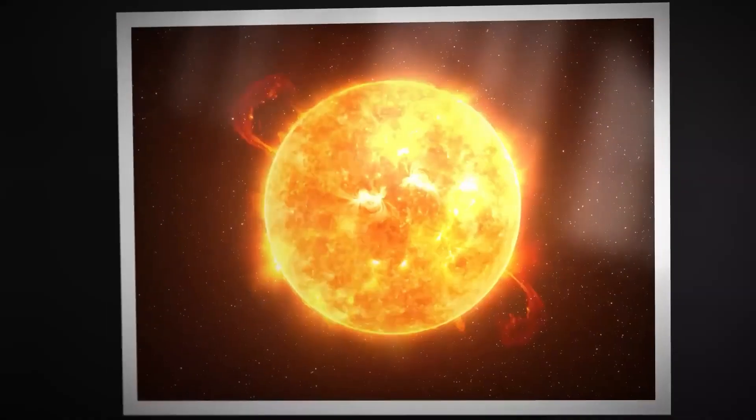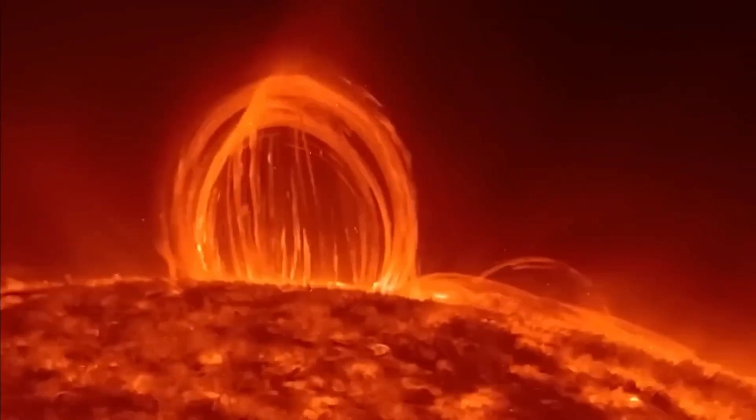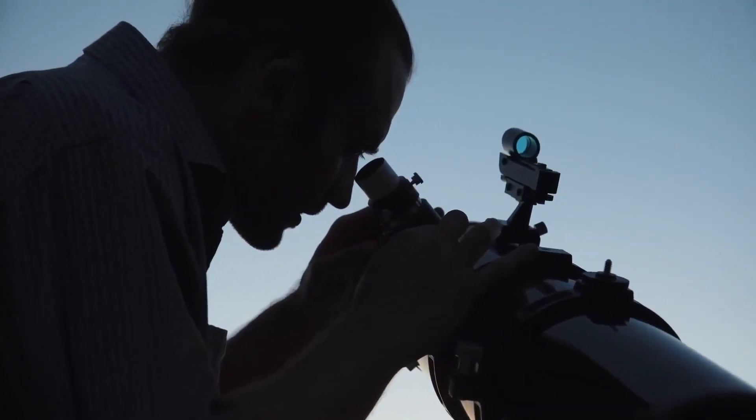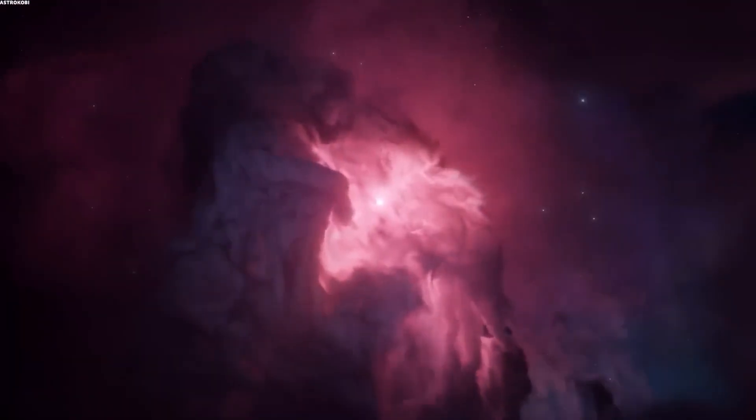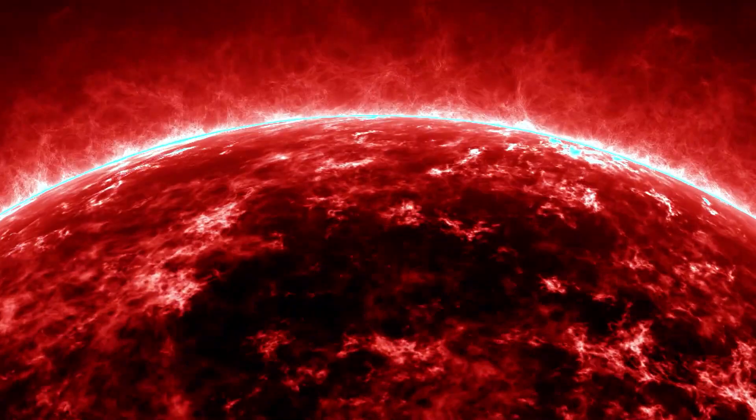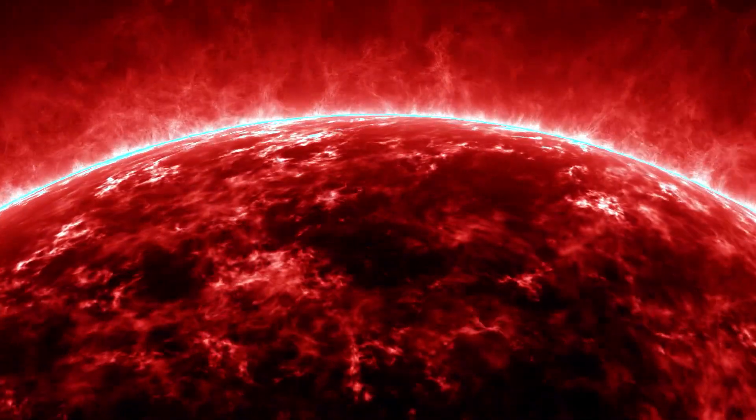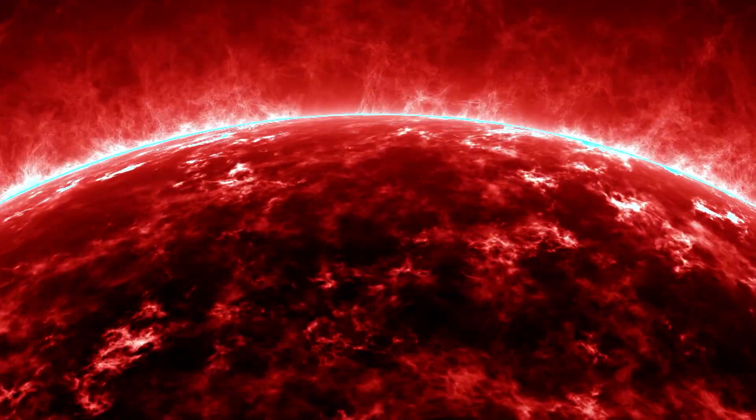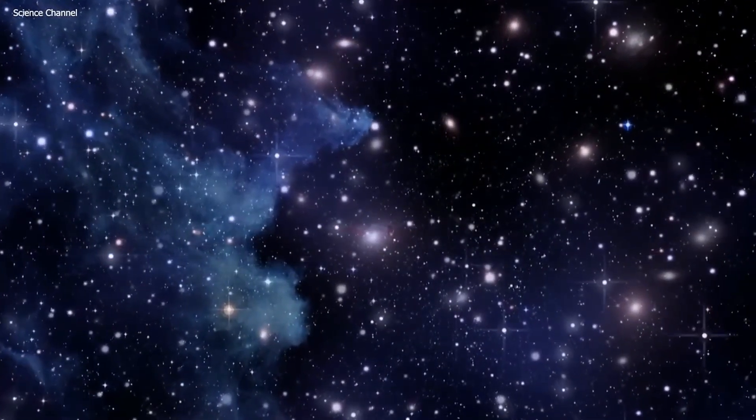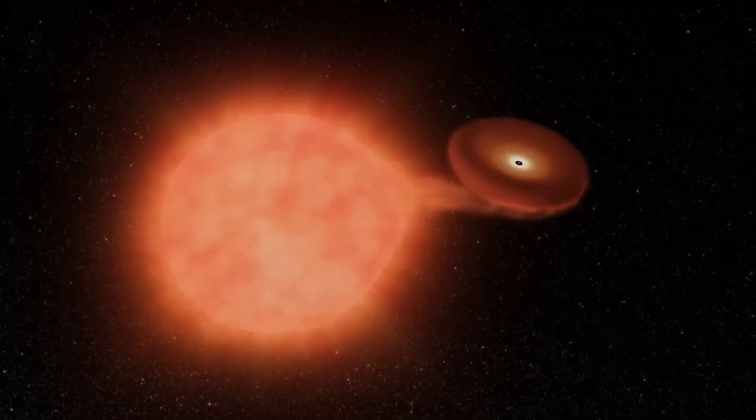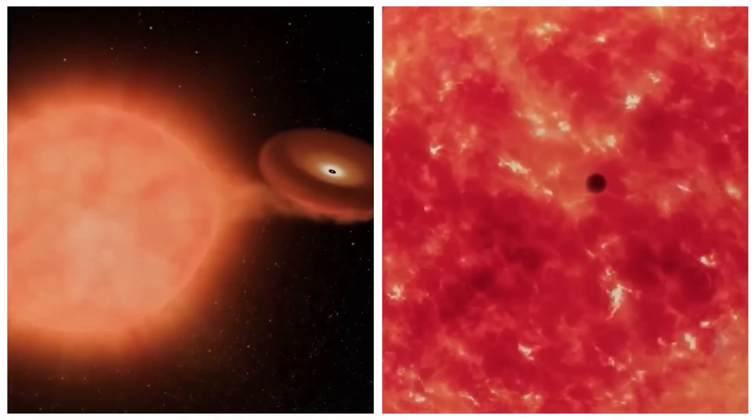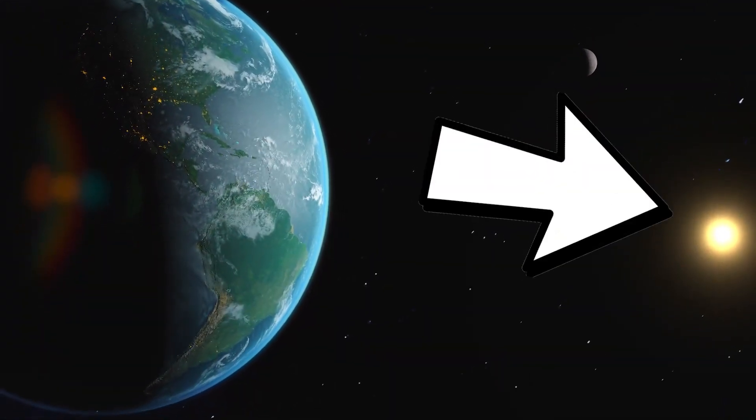So what drives a massive star like Betelgeuse to its demise? Stars, including Betelgeuse, consume their nuclear fuel, and as they do so, they evolve and expand into different phases of burning different elements. But the climax comes when iron starts forming at the core. Iron doesn't release energy when fused, so the star's energy production can't counteract its gravitational pull. This leads to a massive collapse, followed by an explosive supernova.